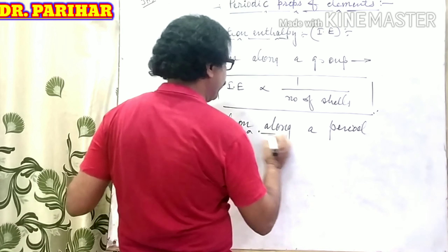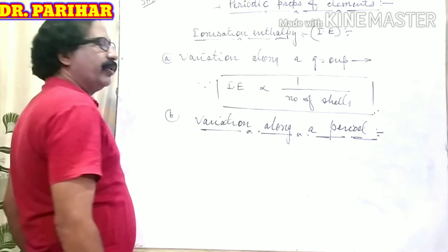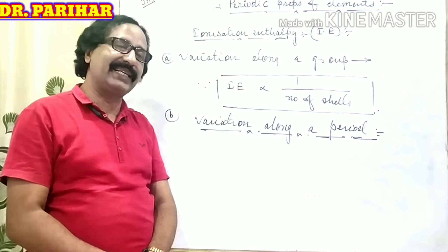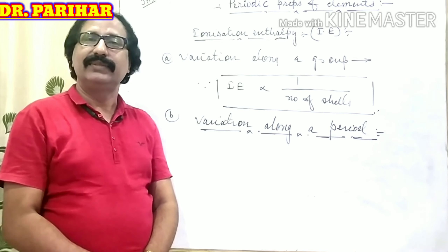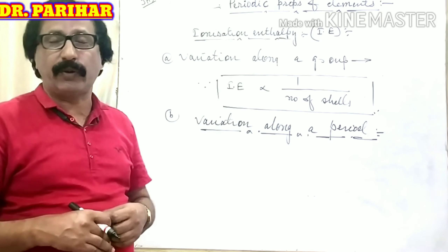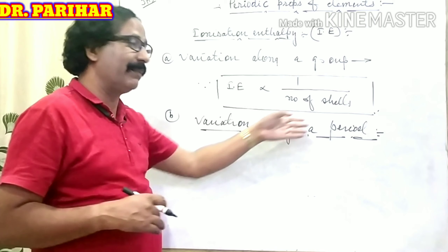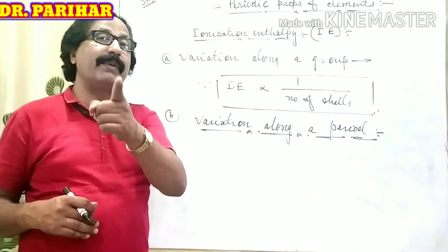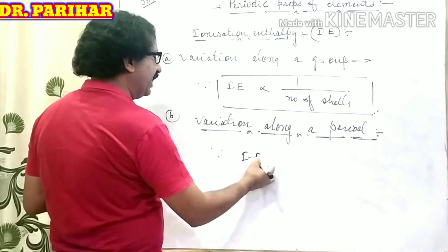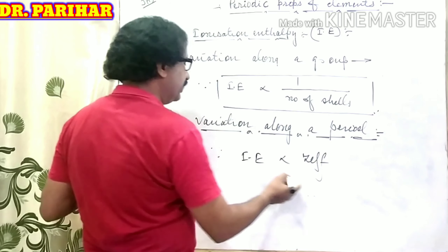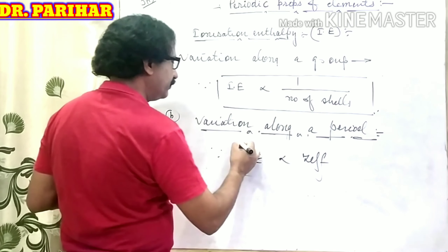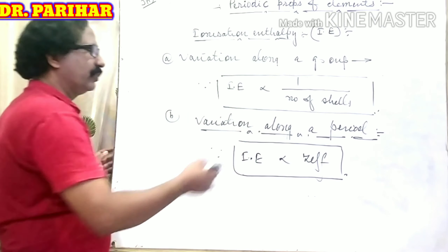Variation along a period: during the explanation of effective nuclear force and shielding effect, I have already discussed that to explain any periodic property while moving along a period, we must remember about Zeff. Ionization enthalpy is directly proportional to Zeff.